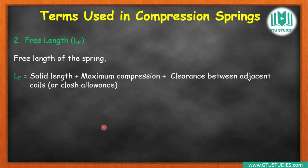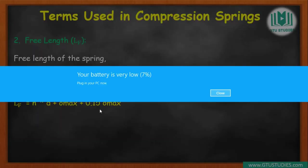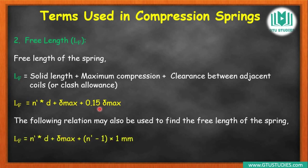The equation is: free length = n' × d (solid length) + maximum deflection (delta max) + clearance. By standardization, the total clearance for the spring is kept at 15% of maximum deflection, i.e., 0.15 × delta max. So free length = solid length + maximum deflection + clearance.